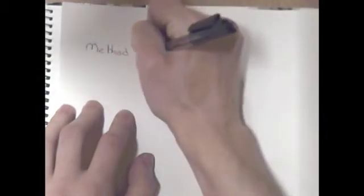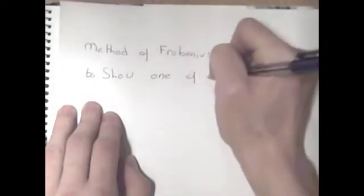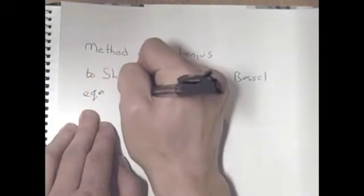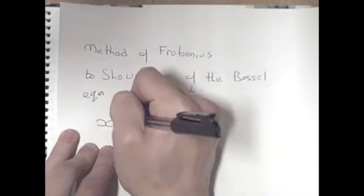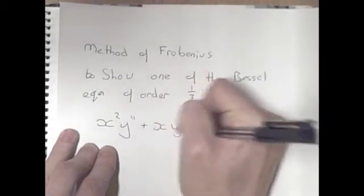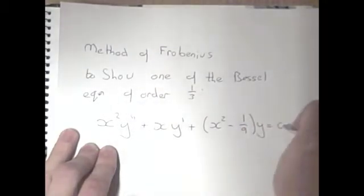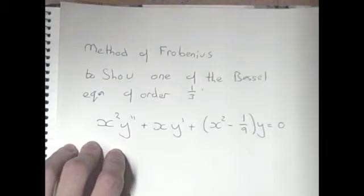I'm going to be looking at the method of Frobenius, which comes up in most exam papers. The questions seem to look the same. They usually say: use the method of Frobenius to show that one solution of the Bessel equation of order 1/3 — which looks like: x squared y double dash plus x y dash plus open brackets x squared minus 1/9 close brackets y equals 0.